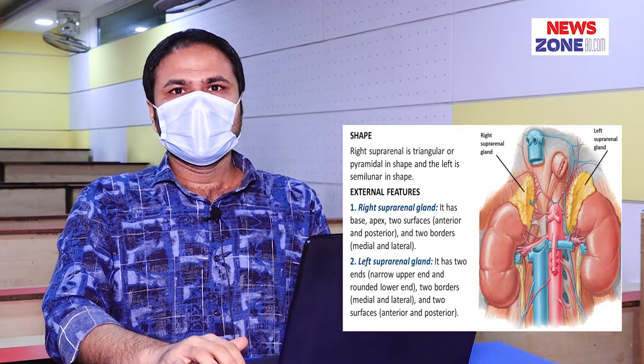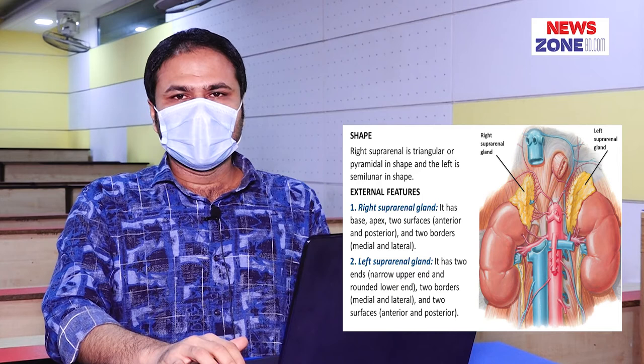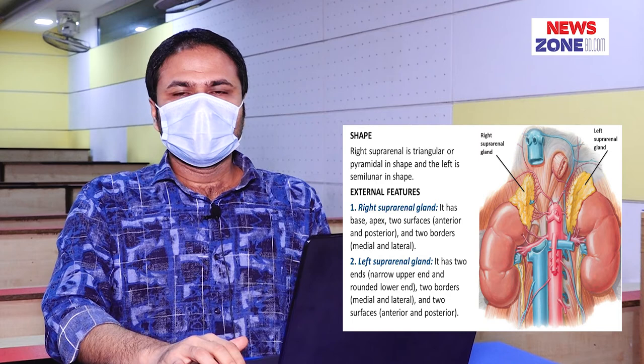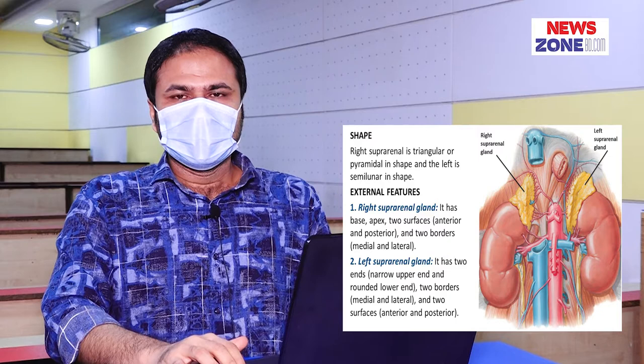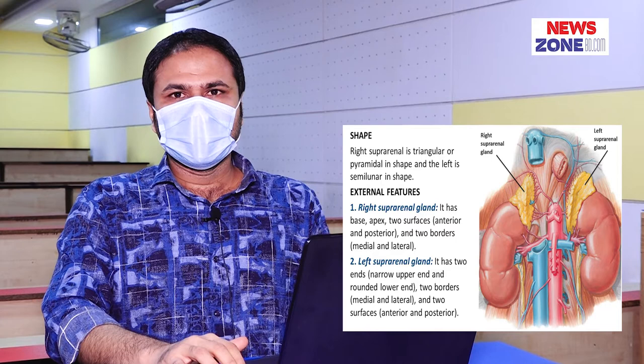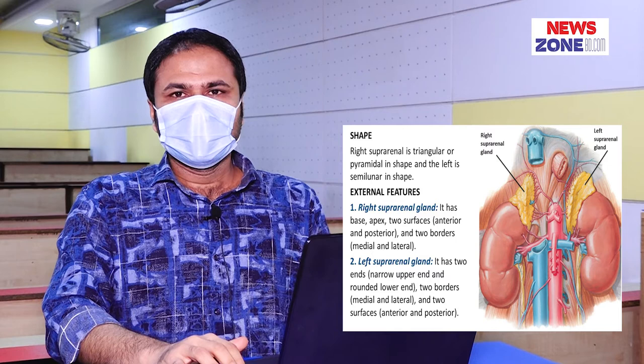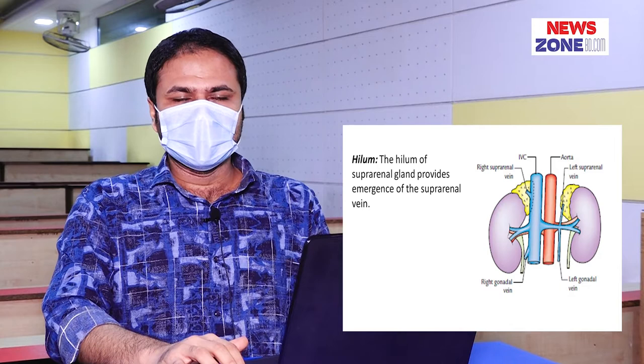Shape and presenting parts of the suprarenal gland. The right suprarenal gland is triangular or pyramidal in shape, and has an apex, base, two borders — medial and lateral — and two surfaces — anterior and posterior. The left suprarenal gland is semilunar in shape, and has two ends — upper and lower — two borders — medial and lateral — and two surfaces — anterior and posterior.